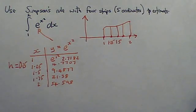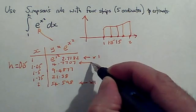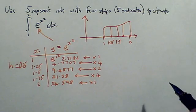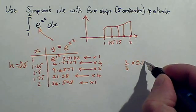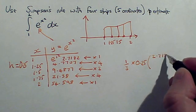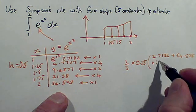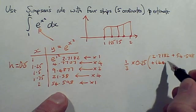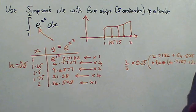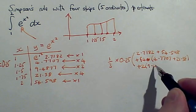So in my table, these are the ones that are going to be times one. And then the second one is going to be the first times four. And that's going to be the last times four. And this one on its own is times two. So however you set this out, it's a third times h, which is 0.25. And then we're going to be doing the 2.7182 plus the other one that's times one is 54.598. And then four times the 4.7707 plus the 21.38. And plus two times, and it's just the 9.4877.